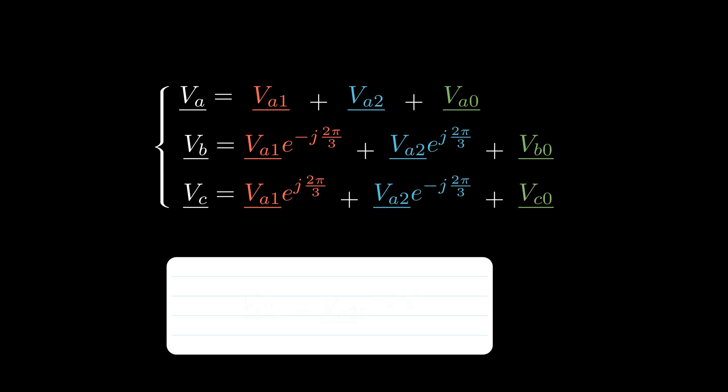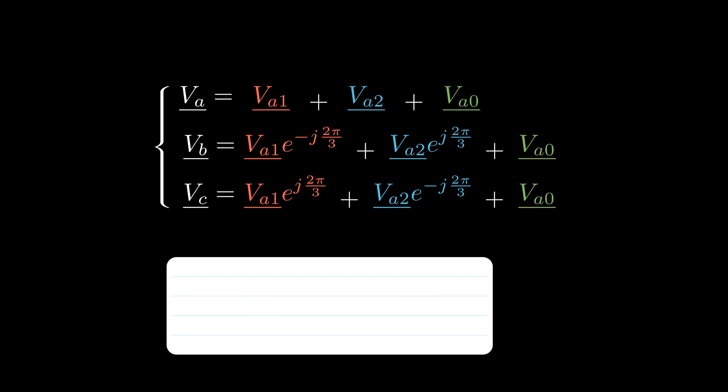Finally, for the zero sequence, all three phases are equal in both magnitude and angle. We can replace phase B and phase C of the zero sequence in the equations.